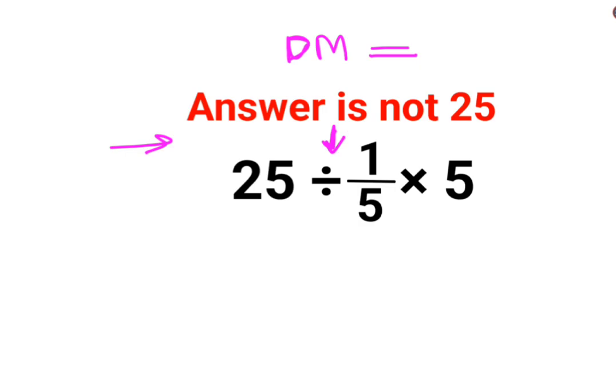So first we will do 25 divided by 1 upon 5. Now what happens in this case is you will follow the rule of KCF where K stands for keeping the first number as it is.